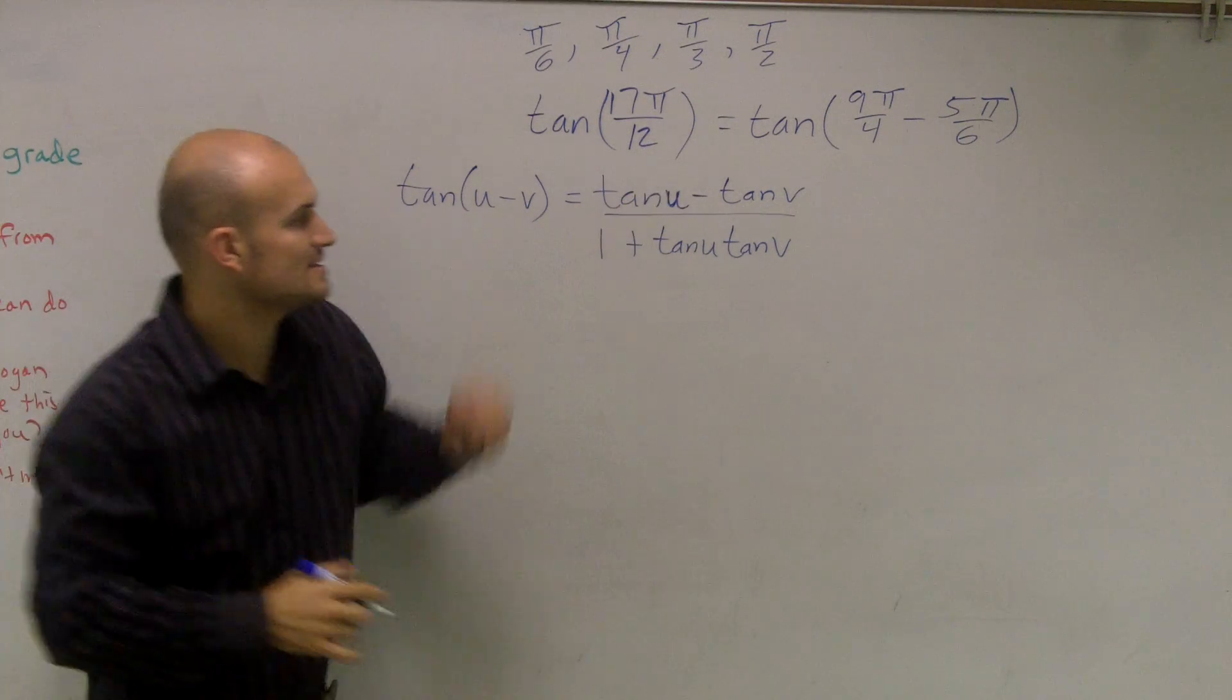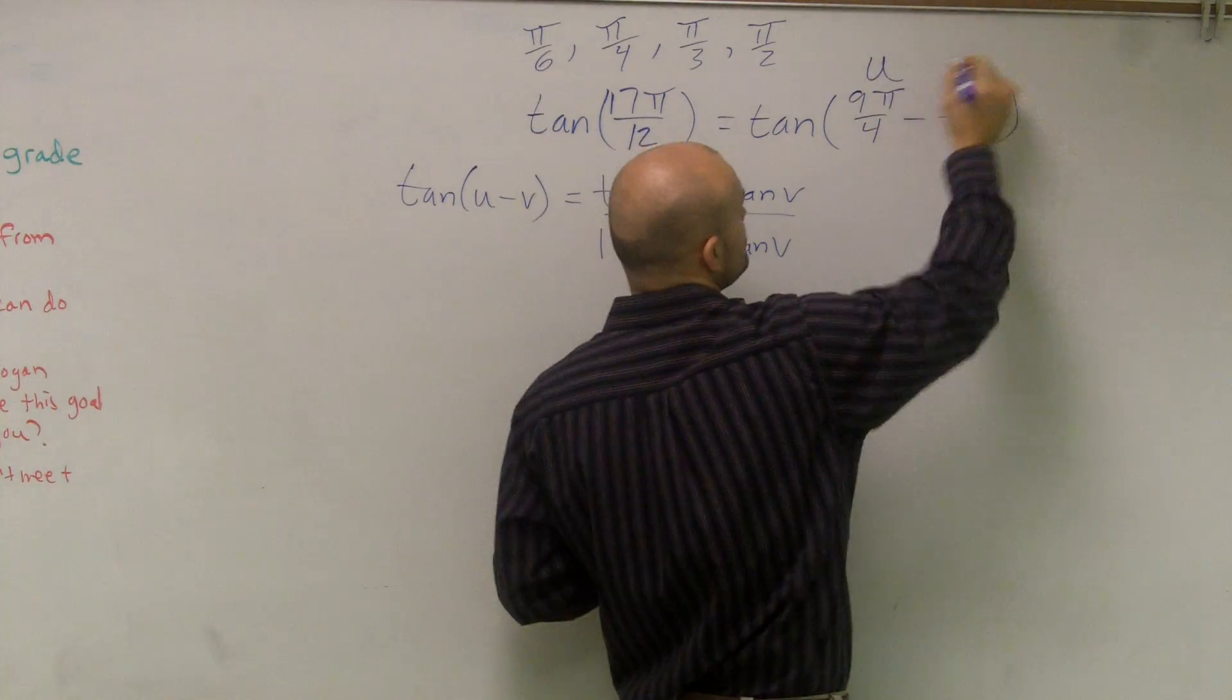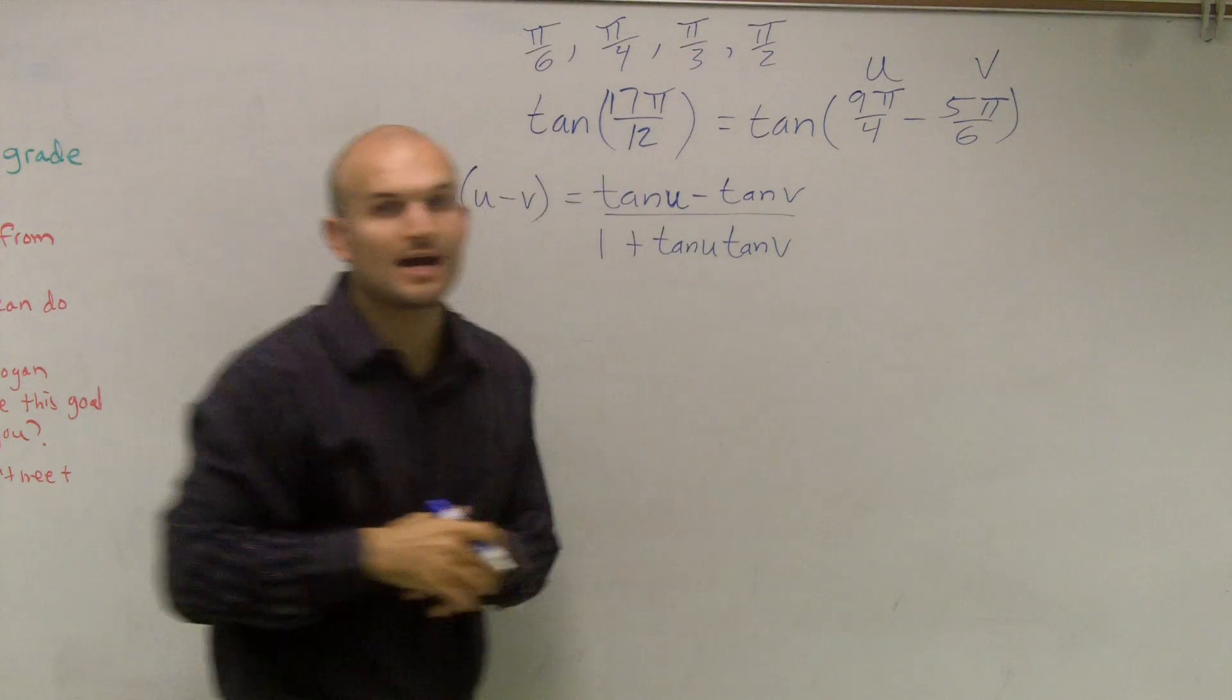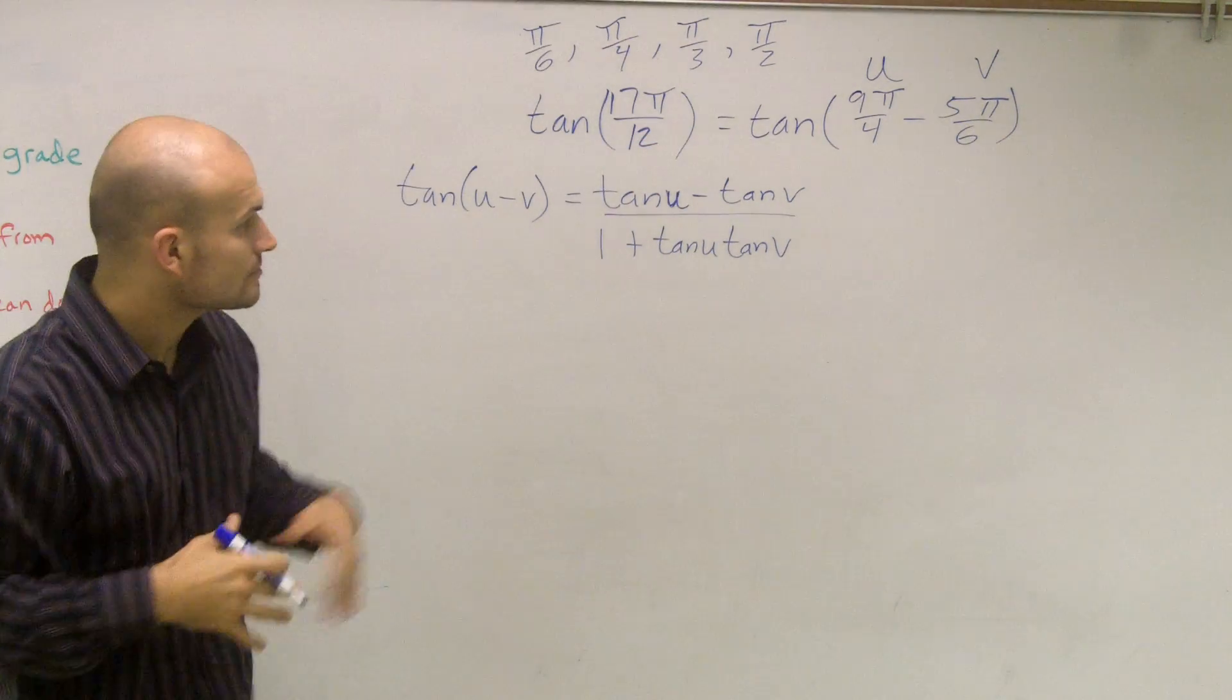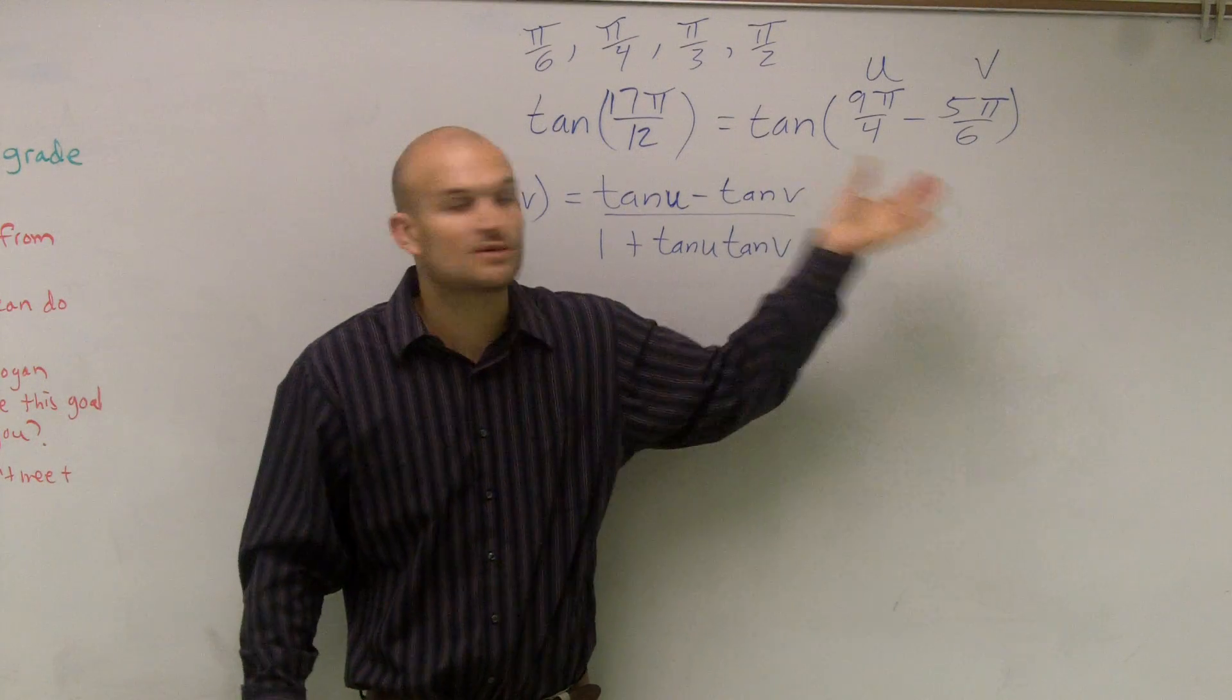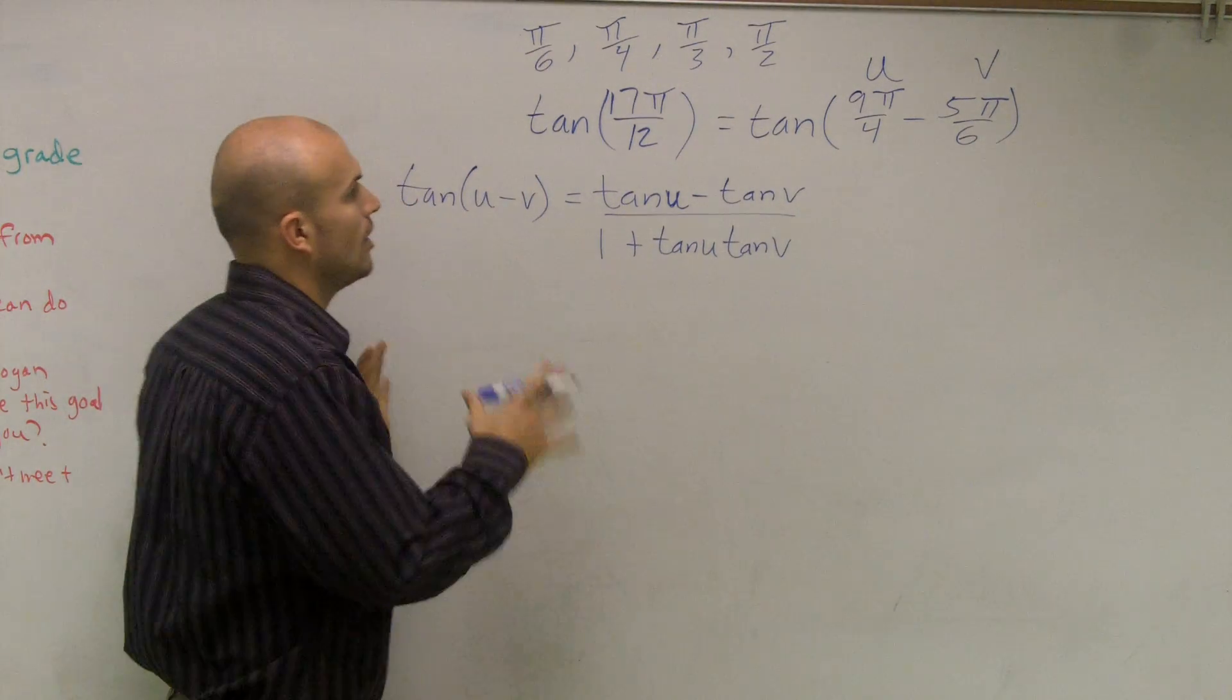So to plug these in, I'm going to represent 9π over 4 as my u and negative 5π over 6 as my v. So now to complete this, what I simply need to do is find the values for u and v.